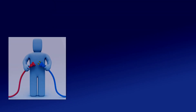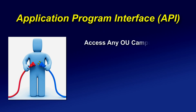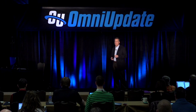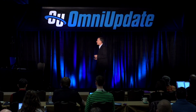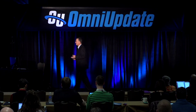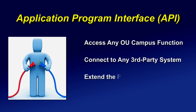The application programming layer — the API itself — allows access to any OU Campus function. It allows you to connect to any third-party system and vice versa, and to ultimately extend the platform in a really significant way. So we want everybody, including us — we challenge ourselves with this every day — we want everyone to dream big.